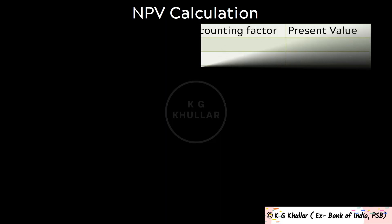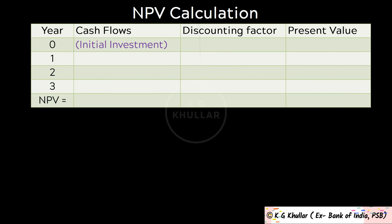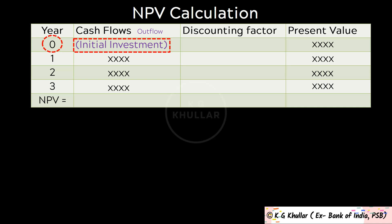The best way to find net present value is by using a tabular format. The first column is the year, then we have cash flows, after that the column of present value factor, and finally the column of present value of all these cash flows. Initially we start with year 0, which is the first day of the project when you make your initial investment — shown as negative since it is a cash outflow. Then we have year 1, 2, 3 and so on, with positive cash flows shown as positive and negative as negative.